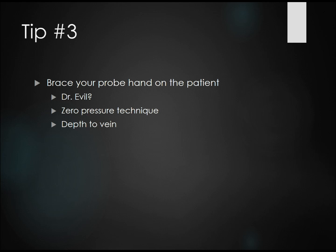Tip three: don't put too much pressure with the probe on the vessels — I call this the Dr. Evil technique, where I hold my pinky finger up and then place it back down so the probe is barely touching the skin. Theoretically, you can perform this without any pressure as long as there's a thin layer of gel. Pressing down can collapse small veins and significantly change the depth from skin surface to vein. This is actually one of the main reasons people have difficulty placing IVs — when placing the catheter there's too much pressure, and when released, the soft tissue rebounds and pulls the needle tip out of the vein, so the operator ends up threading into soft tissue.